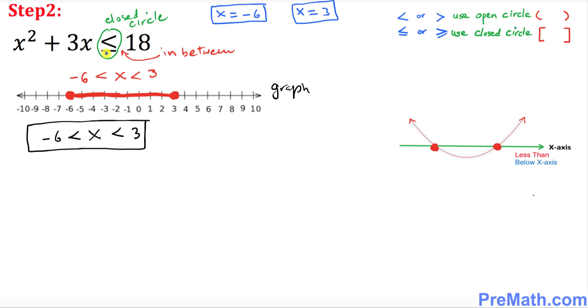So whenever you have a less than or less than equal to, the graph is always going to be below this x axis. That means below x axis means it's going to be restricted to this part only. You can see this one.